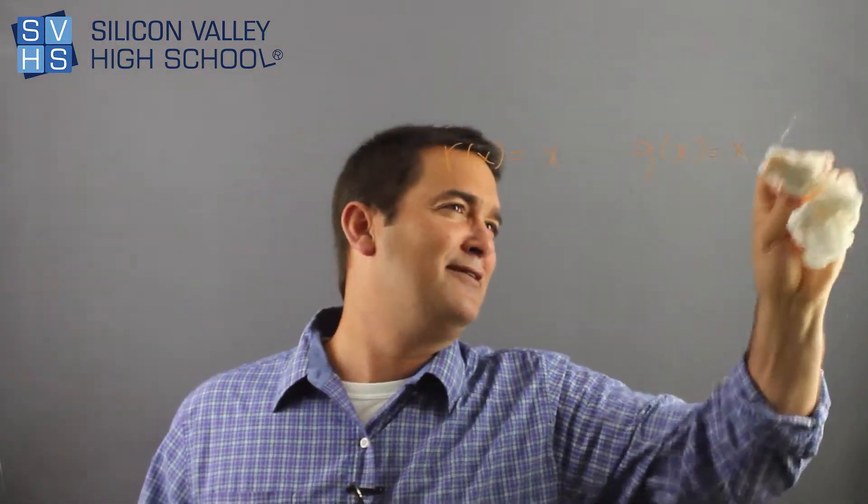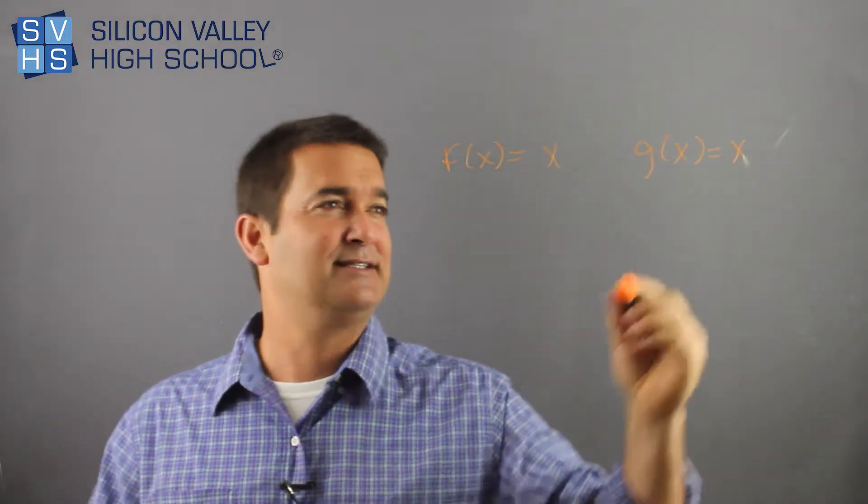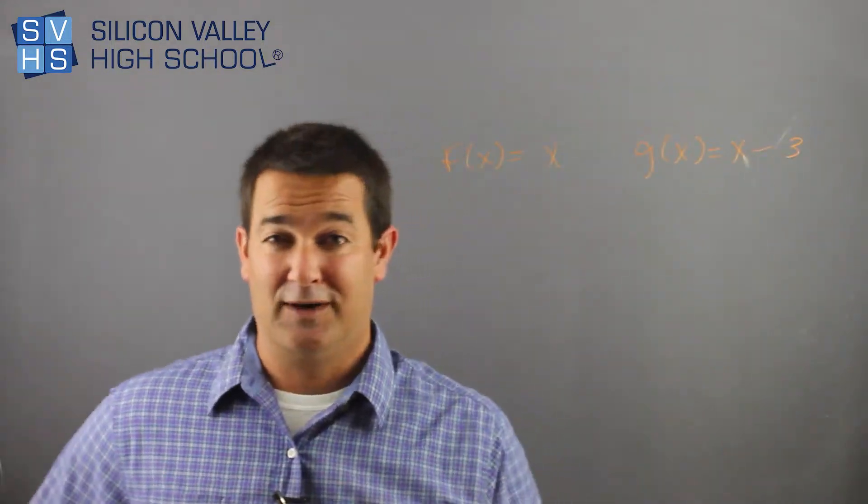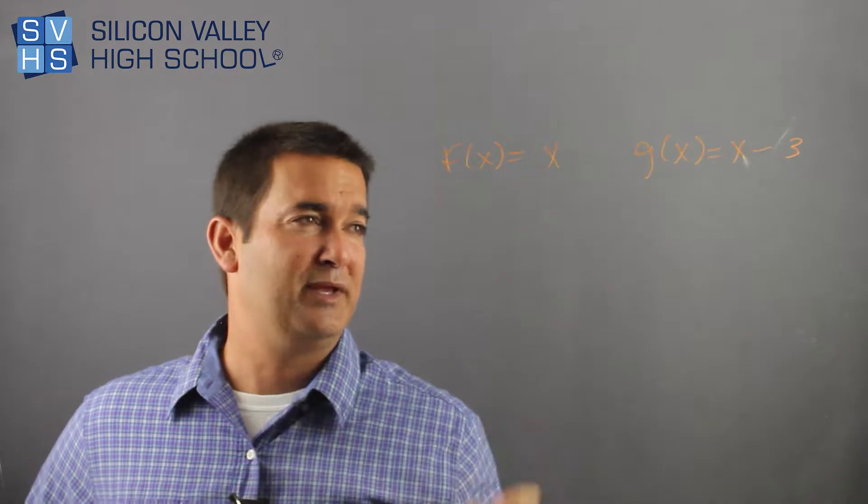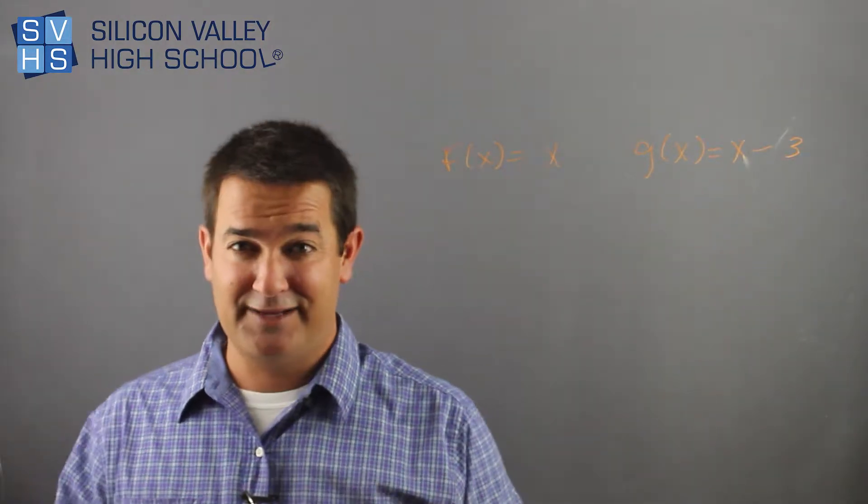Describe the transformation of f of x to g of x in this case. Well, from f of x being x to g of x, it went down 3. Totally easy.